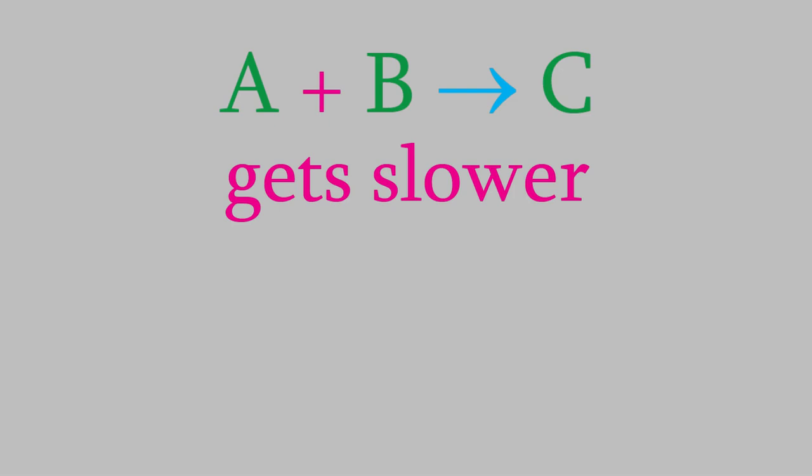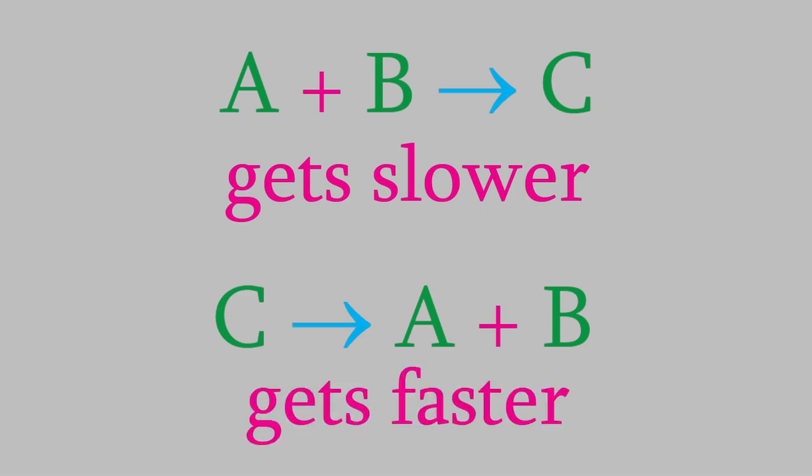But the exact opposite will happen in the reverse reaction. We start with no C molecules, so the reverse reaction, which has C as a reactant, starts out with a rate of zero. However, the amount of C will start to increase because of the forward reaction, and that will allow the reverse reaction to start. As the amount of C increases, the rate of the reverse reaction will go up. So the forward reaction gets slower and the reverse reaction gets faster. If we were to plot the rates on a graph, they'd look like this: the forward reaction gets slower and slower, and the reverse reaction starts at zero and gets faster.